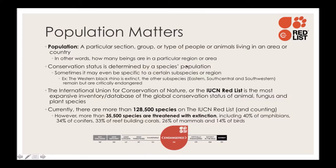Sometimes conservation status is specific to a certain subspecies or region. For example, the western black rhino went extinct, whereas the other three subspecies — the eastern, south central, and southwestern — are still in existence but critically endangered. The International Union for Conservation of Nature, or the IUCN Red List, is the most expansive database of the global conservation status of any animal, fungus, or plant species.